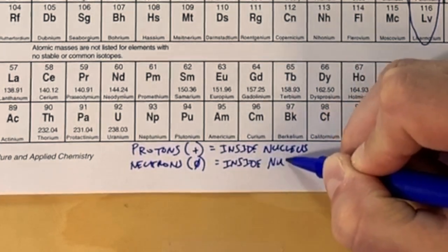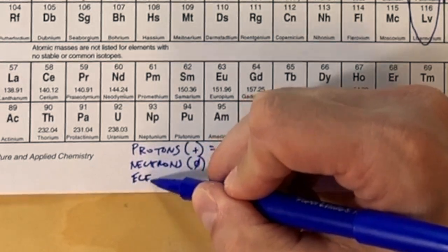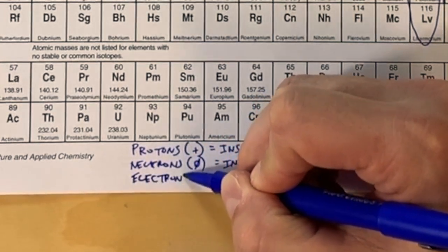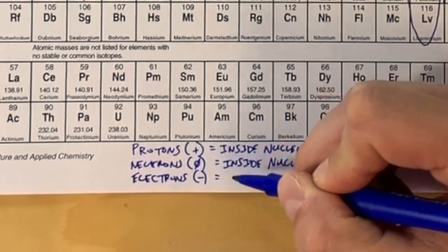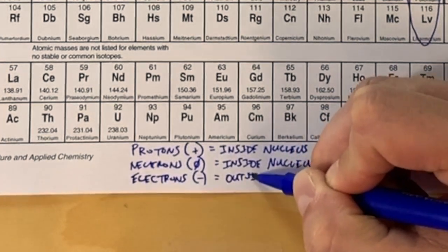Remember, if you add these up, you can get the atomic mass. Lastly, we have the electrons, which have very little mass but they have a negative charge and they're found outside of the nucleus of an atom.